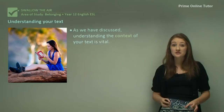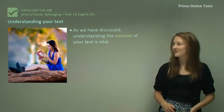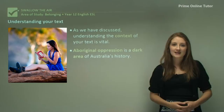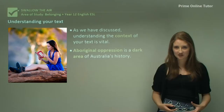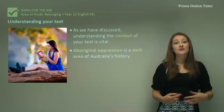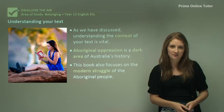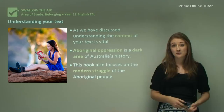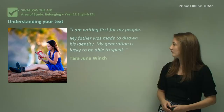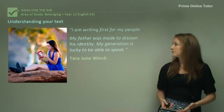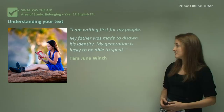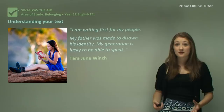Understanding the context of your text is really vital to understanding what it actually means. Aboriginal oppression is a dark area of Australia's history. This book also focuses on the modern struggle of the Aboriginal people — not just how they've struggled in history but how they are struggling in modern society. If we take a look at this quote from the author Tara June Winch: 'I am writing first for my people. My father was made to disown his identity. My generation is lucky to be able to speak.'